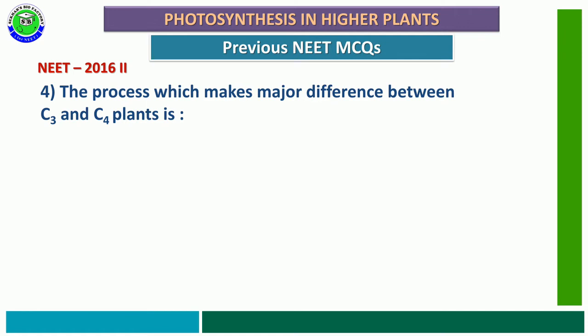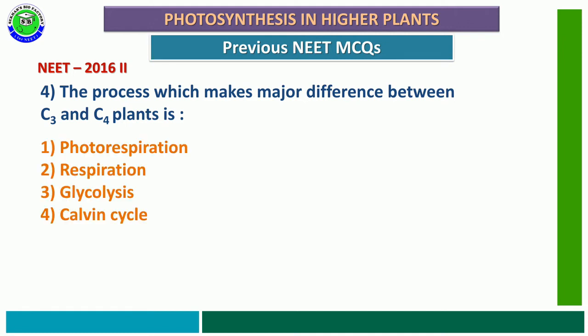Question number 4: The process which makes the major difference between C3 and C4 plants is — first option, photorespiration; second option, respiration; third option, glycolysis; fourth option, Calvin cycle. The correct answer is photorespiration. In C4 plants, two types of cells are present and Rubisco enzyme is absent from mesophyll cells, so photorespiration is avoided. But photorespiration is common in C3 plants, making it the major difference between C3 and C4 plants.